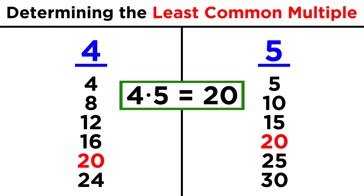As we can see, many times the least common multiple is simply the product of the two numbers. This product will always be a common multiple, because the product of the two numbers must necessarily have the two original numbers as factors. However, this will not always be the least common multiple — sometimes there is a smaller common multiple.